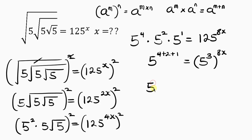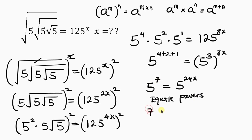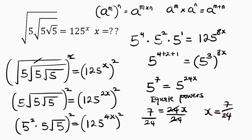So 5^7 equals 5^(3 times 8x), which is 5^(24x). Since the bases are equal, we equate the powers: 7 = 24x. Dividing both sides by 24 gives x = 7/24.